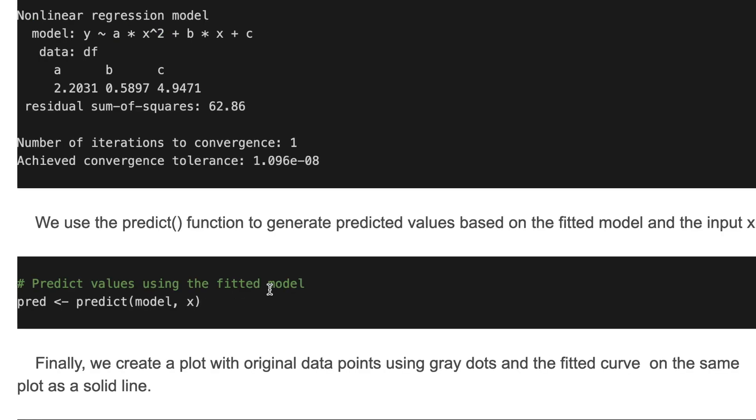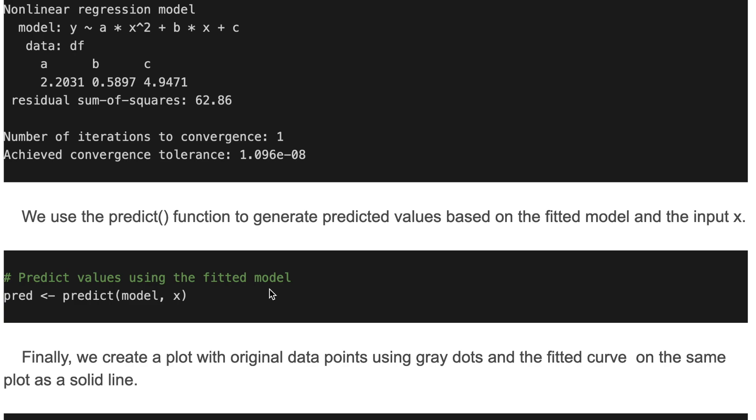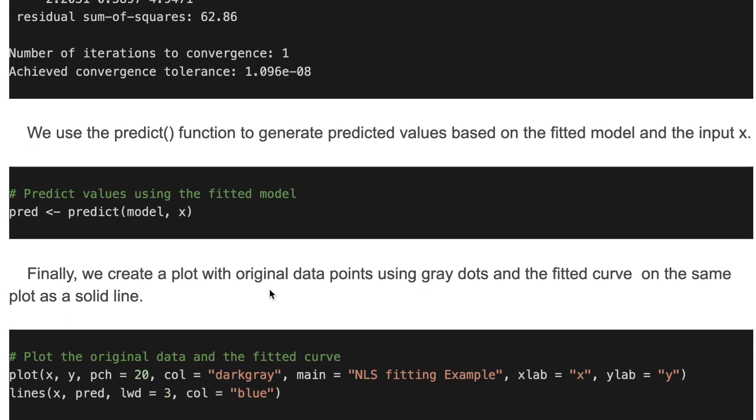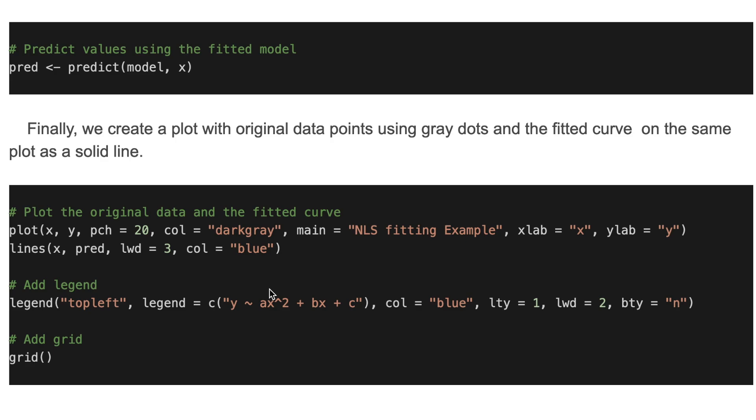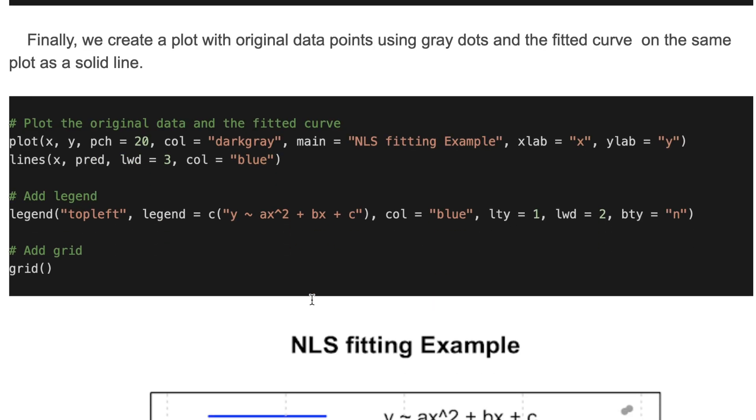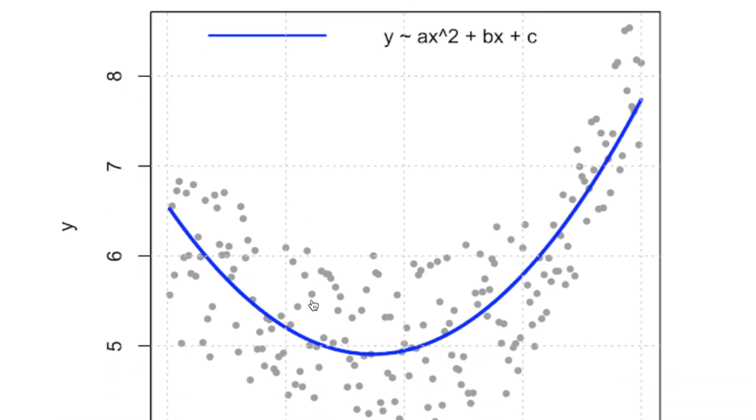To predict data, we use the predict() function to generate the predicted values based on the fitted model and the input x. Finally, we create a plot with original data points using gray dots and the fitted curve on the same plot as a solid line. Here is the result.